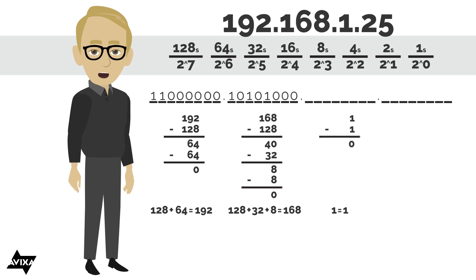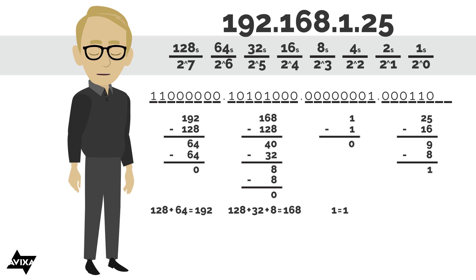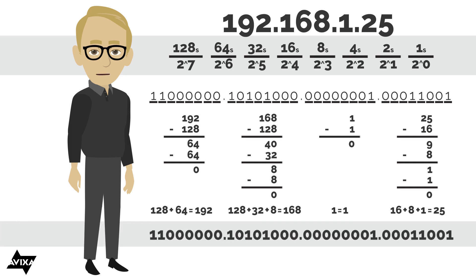The third octet is simple — the only thing I have is 1. So in all of these other positions, I can have 0's except for the 1's position. And then we have 25. 128 is too big, 64 is too big, 32 is too big. Well, 16 will fit, so I can have something in the 16's position. Take 16 away from 25, that leaves 9. 8 will fit into 9, so we can put something in the 8's position. That leaves a remainder of 1. 4 is too big, 2 is too big, but then we have 1. Take 1 away from 1, the remainder is 0. So the 192.168.1.25, if we represented that in binary, would be 11000000.10101000.00000001.00011001.